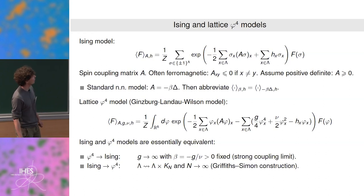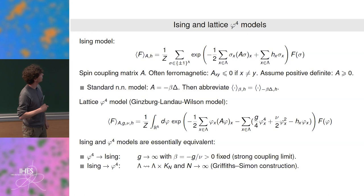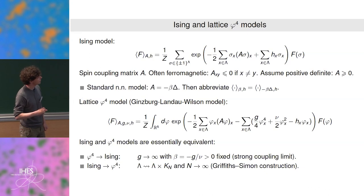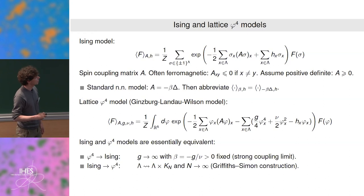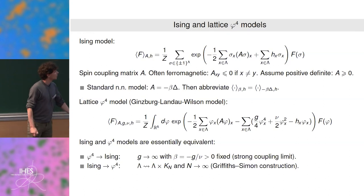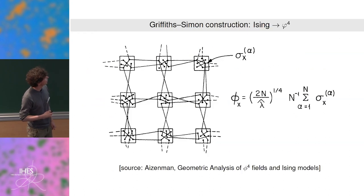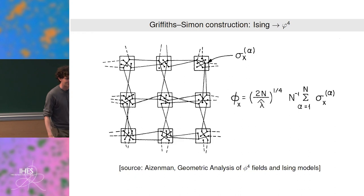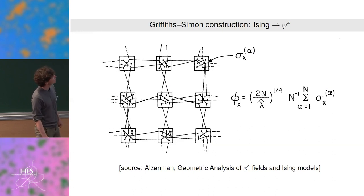For all physical purposes the Ising model and the phi-4 model are equivalent. You can obtain the Ising model from the phi-4 model by taking the interaction strength g to infinity with nu taken suitably to minus infinity, so the double well concentrates on two points. Conversely, you can obtain the phi-4 model from the Ising model by the Griffiths–Simon construction: replace every vertex of the graph by a complete graph tuned to be at the critical temperature with mean-field interaction. This picture from Michael Aizenman's beautiful paper summarizes this construction nicely.